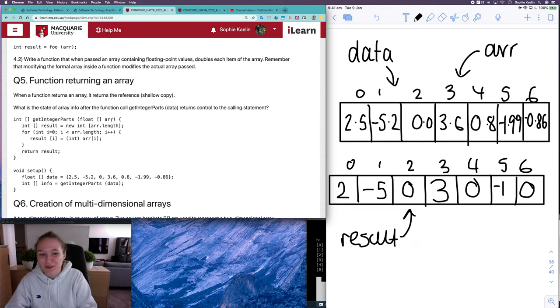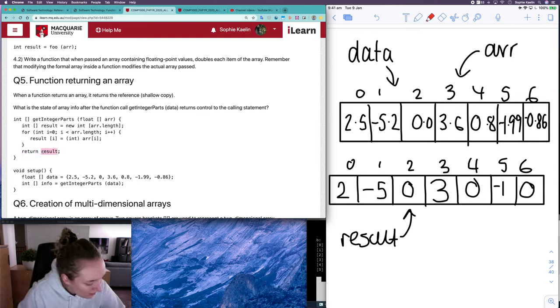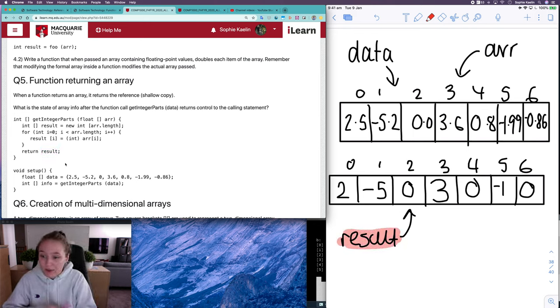our memory diagram will look like at this point in time, once we've finished this loop. So once we've exited this loop, we've got our return statement, which says return result. So it's this reference result, which is being returned back to where the function call was and the function call was here.